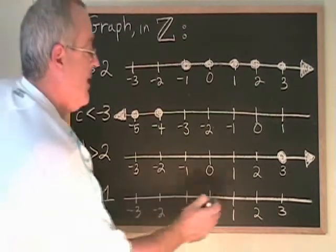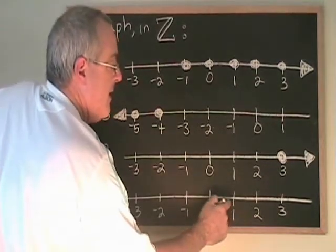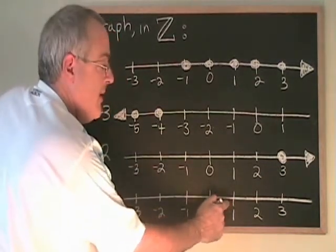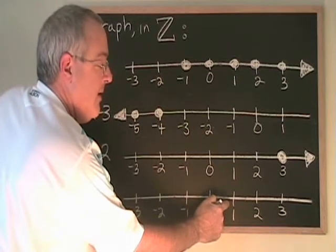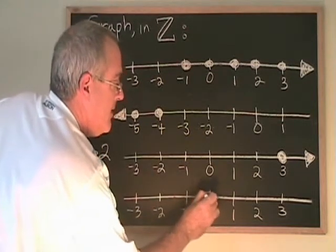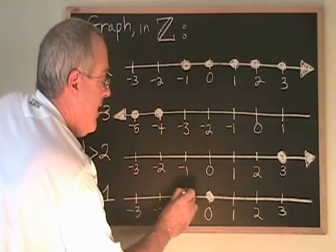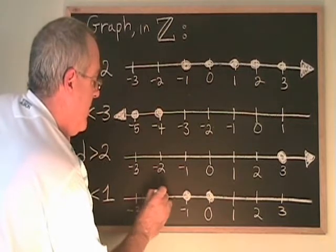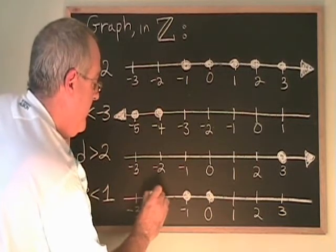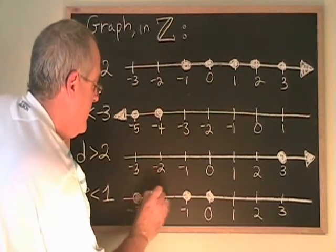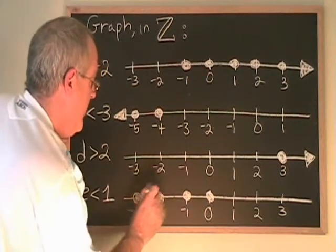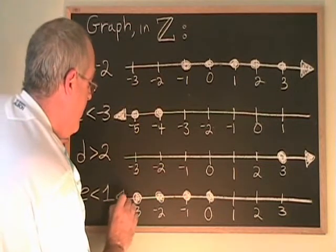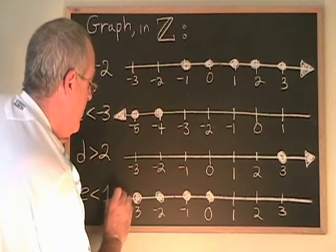E less than 1. 1 is not less than itself, so 1 is not part of the answer. 0 is less than 1, and all of the negative integers are less than 1. They are all part of the answer, going on and on forever in the negative direction.